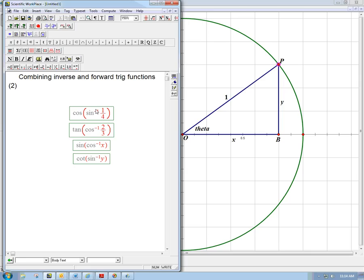Let's look at combining inverse and forward trig functions where they don't match. So we have the cosine of the inverse sine instead of something like cosine of inverse cosine. Let's look at some examples of this.